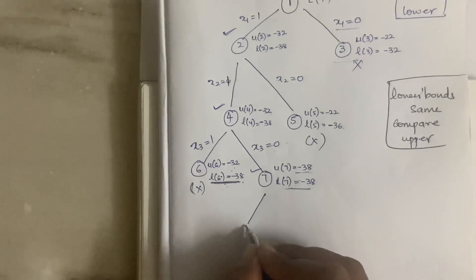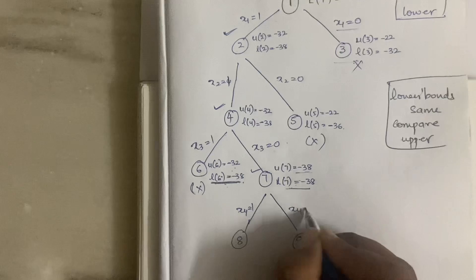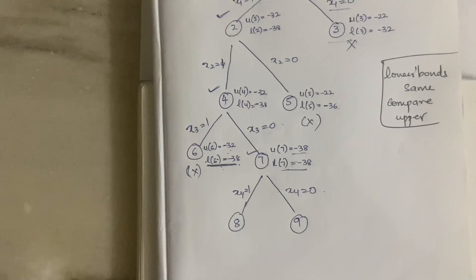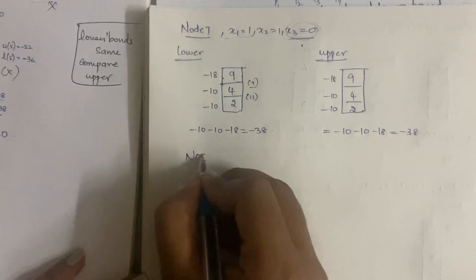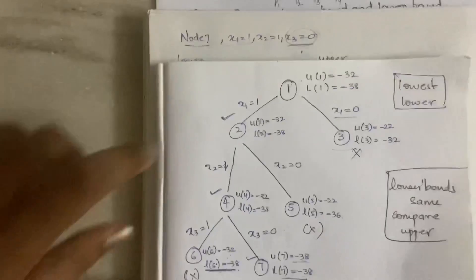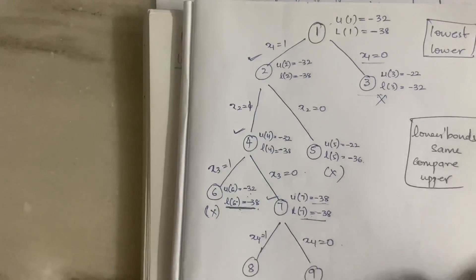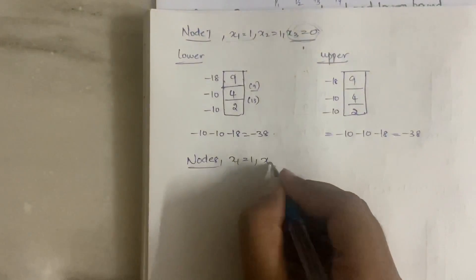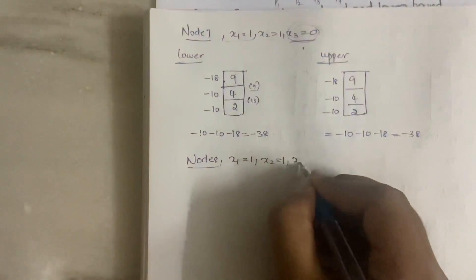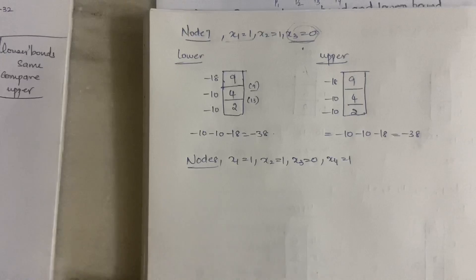We expand node 7 into node 8 and node 9. The condition here is x4 = 1 for node 8 and x4 = 0 for node 9. Let's calculate upper bound and lower bound for both. For node 8, the path is x1 = 1, x2 = 1, x3 = 0, and x4 = 1.